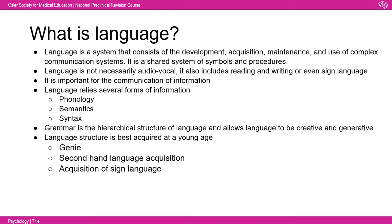There are also other examples of how language structure is best acquired young, including second language acquisition — the earlier the exposure, the greater the fluency. A study by Johnson and Newport in 1989 examined English grammar comprehension in Chinese and Korean immigrants to the USA, controlling for years of exposure. They found a linear increase in grammatical performance for those arriving before age 16, whereas after age 17 there was no correlation between grammar and new language acquisition.